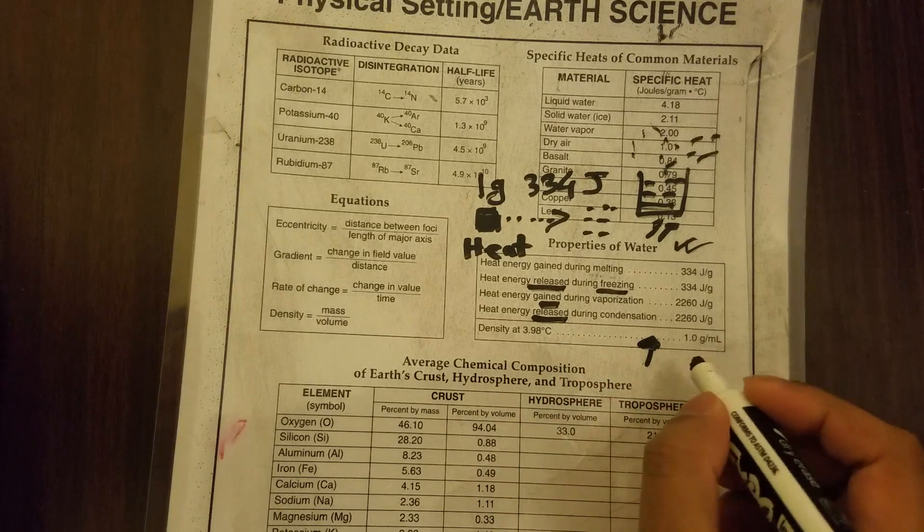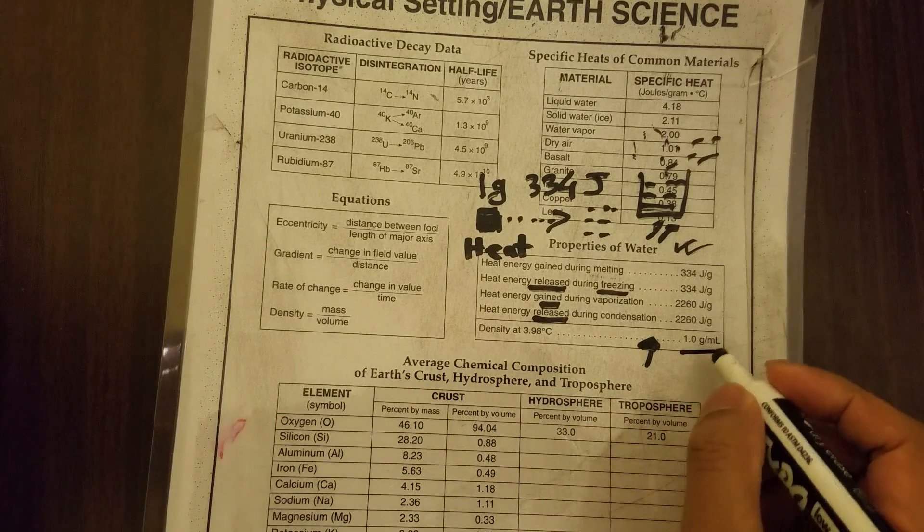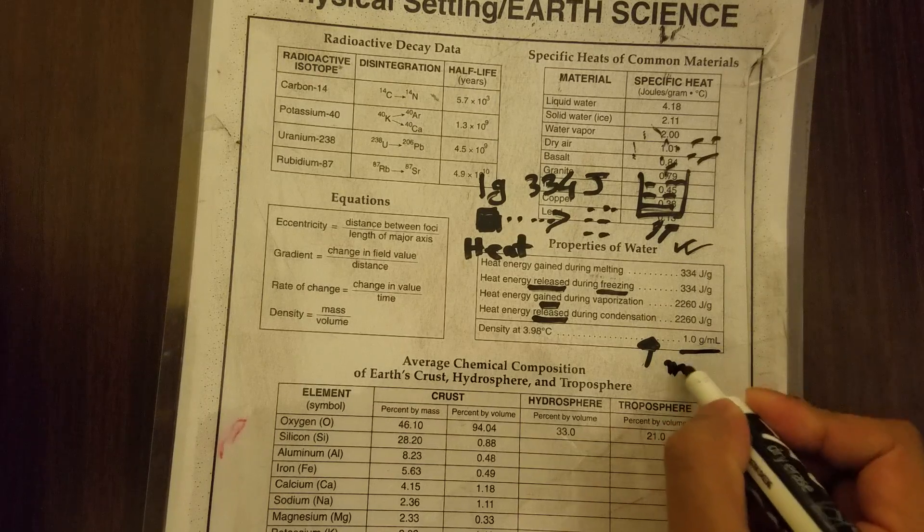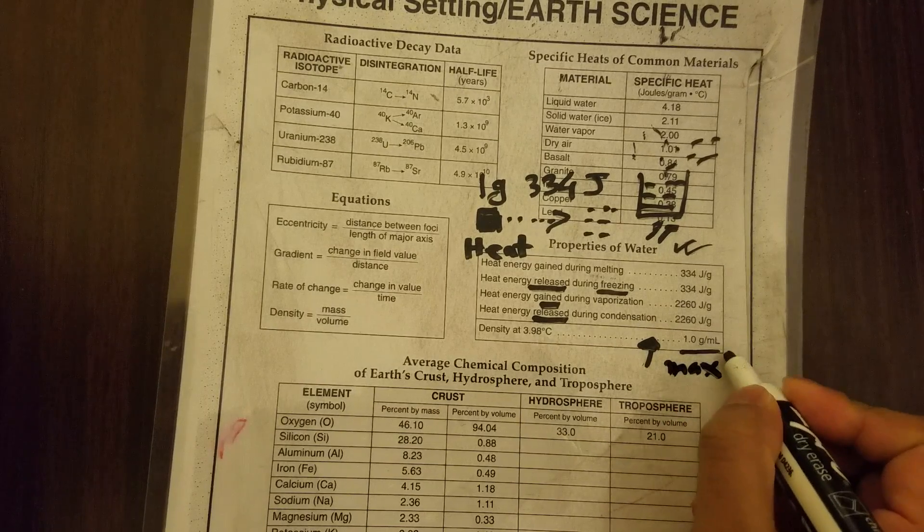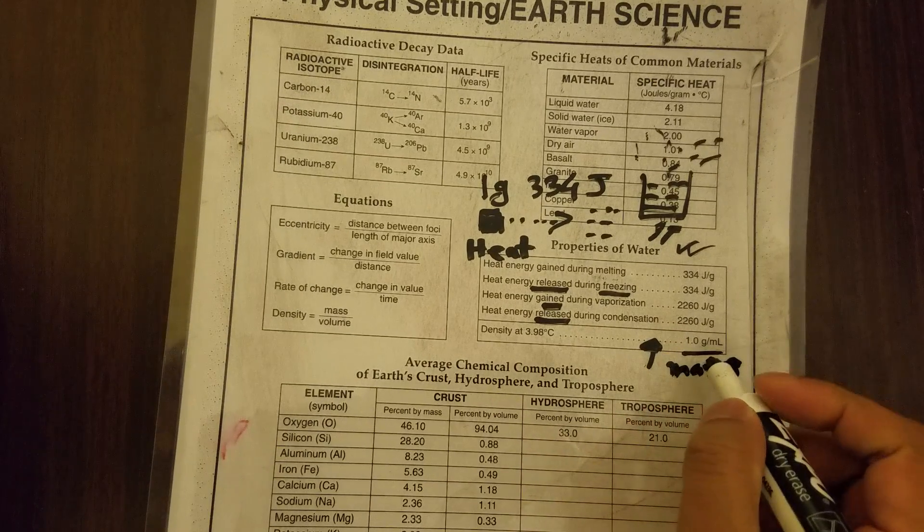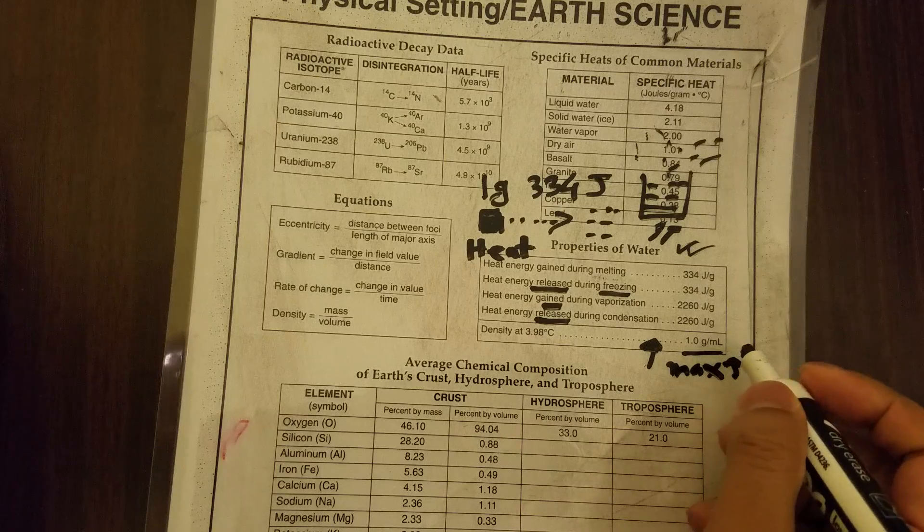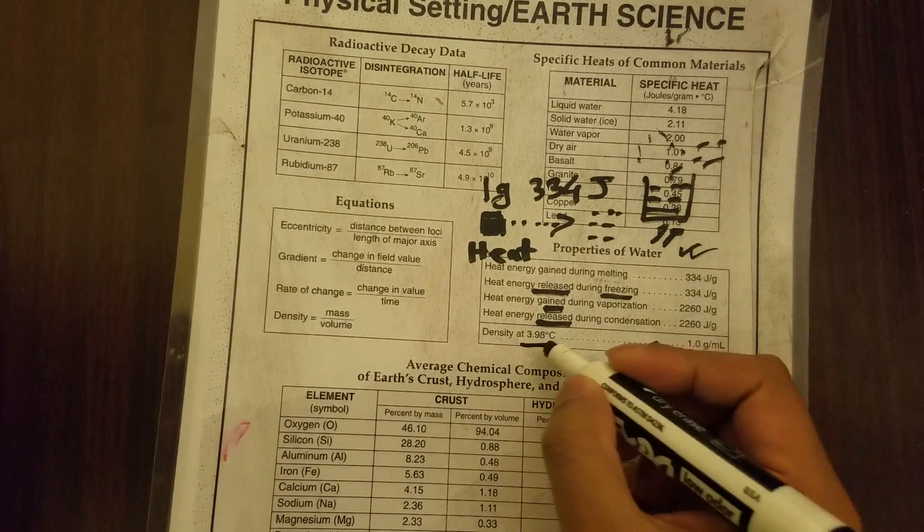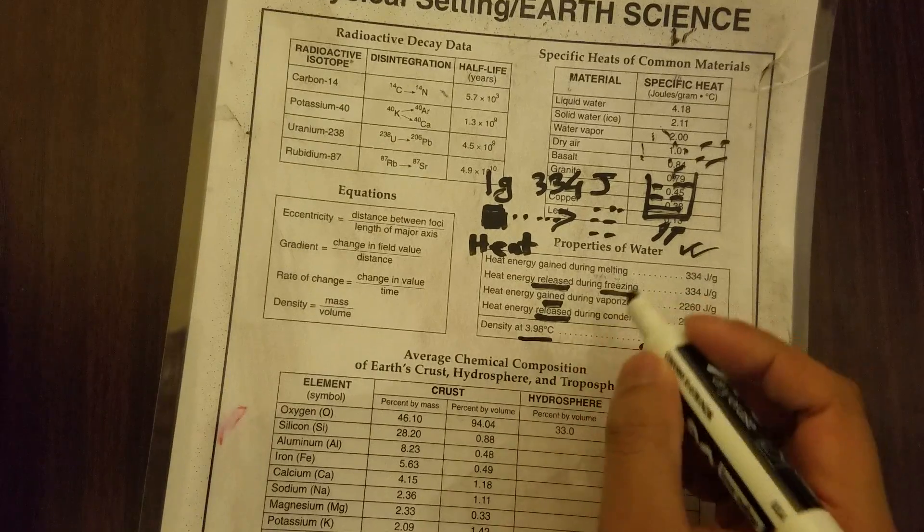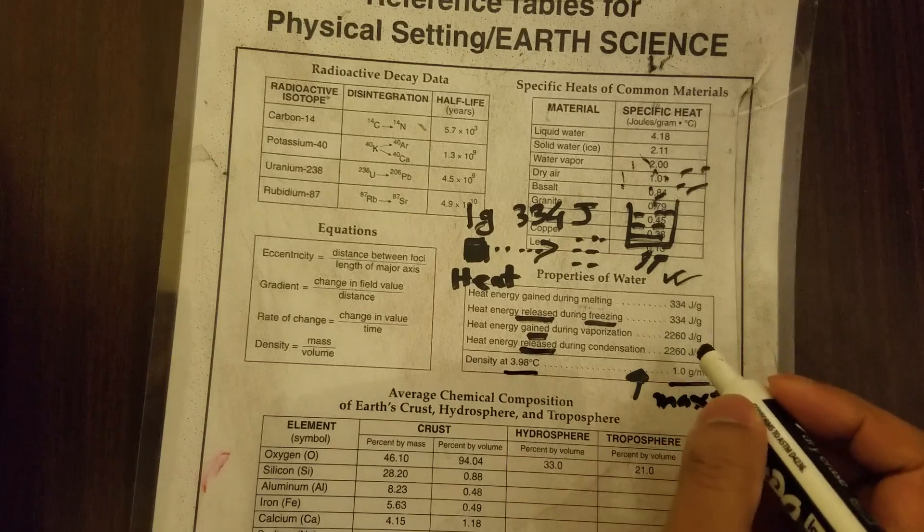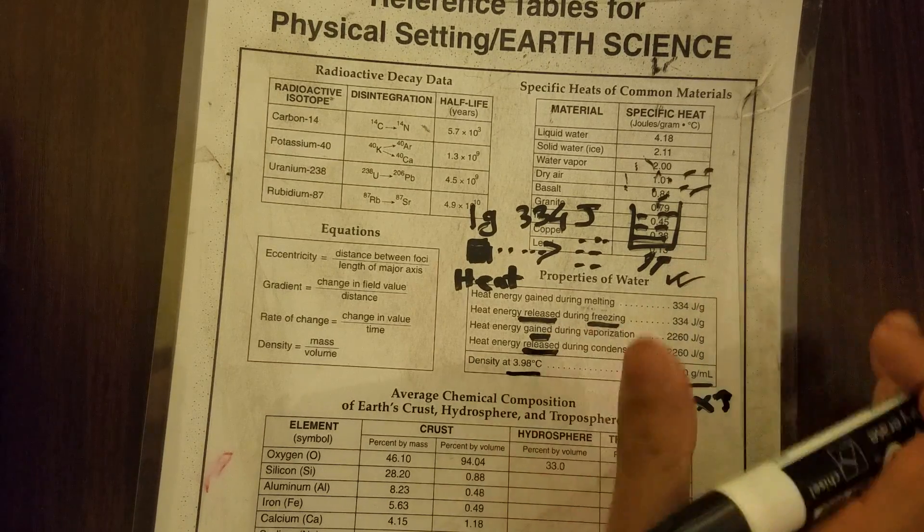The last line is also important. The density of water at 3.98 degrees Celsius is one gram per milliliter. You need to know that this is the max density of water. If the temperature is less than this or higher than this, the density will decrease.